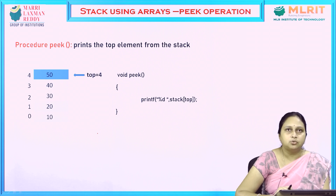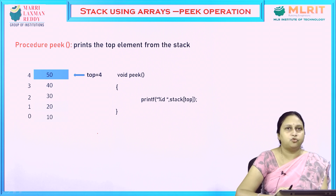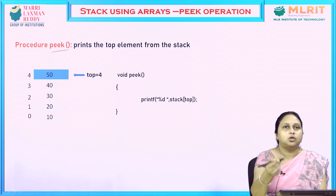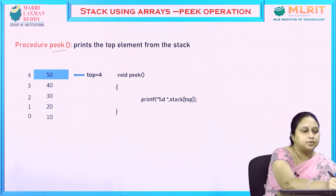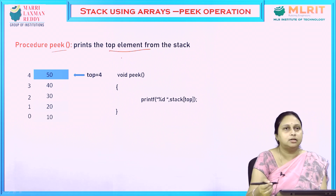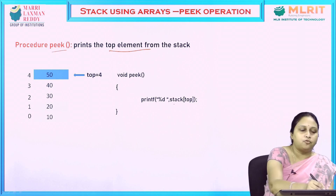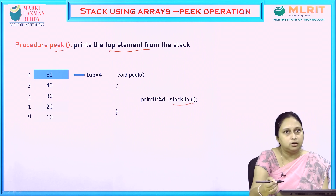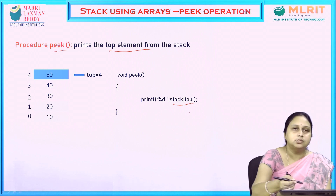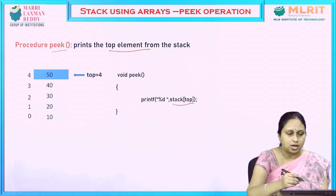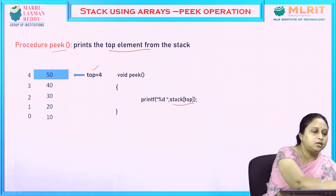The next operation is peek. If I want to display the top element from the stack, we use stack[top] directly — since top is pointing to the top element, we can print stack[top], which will display 50 in our example.